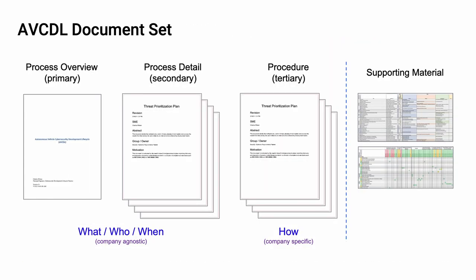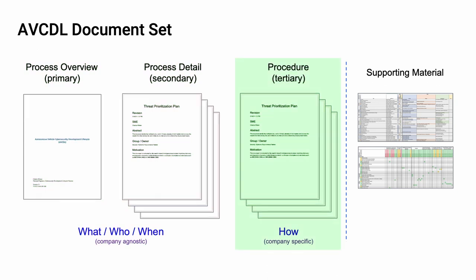The AV-CDL itself is comprised of four major document types. The first is the overview, also known as the primary document, entitled Autonomous Vehicle Cybersecurity Development Lifecycle, or AV-CDL. The second type are the process detail documents, also called the secondary documents. These 70 documents individually detail all the processes within the AV-CDL. Together, the primary and secondary documents give us the what, the who, and the when of the lifecycle. This material is completely company agnostic. The third set of documents — the procedures or tertiary documents — are the how of the lifecycle. These documents are company specific, telling us exactly what tools are used and what procedures are followed to implement the processes specified in the primary and secondary documents. It is expected that every company adopting the AV-CDL provide their own procedure documents.